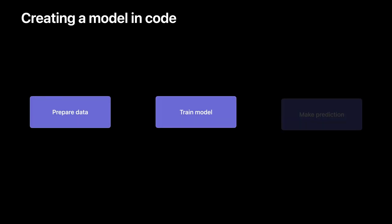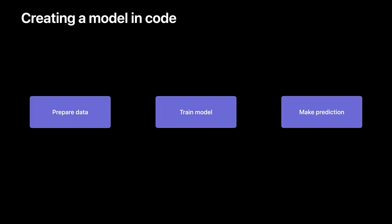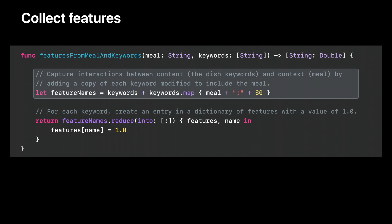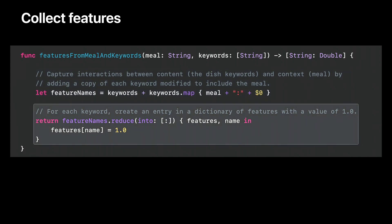There are three real steps to adding a tabular classifier or regressor to an app: setting up the data, training, and prediction. The first function creates the features leveraged in this regressor from the meal and keywords. I take the keywords associated with each dish and combine them with the current meal (the context), creating a new keyword that captures the interaction between the content (dish keywords) and the context (meal keywords). We put the value of 1.0 in the dictionary to indicate that a particular keyword is present in the data entry.